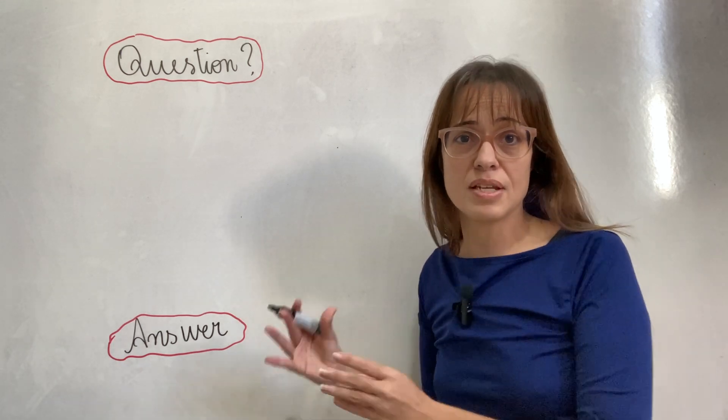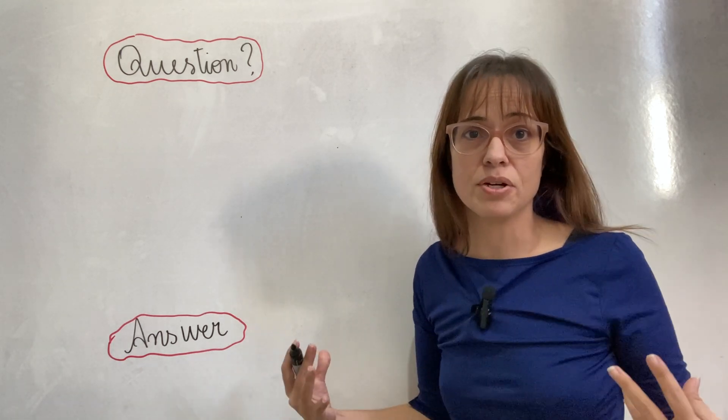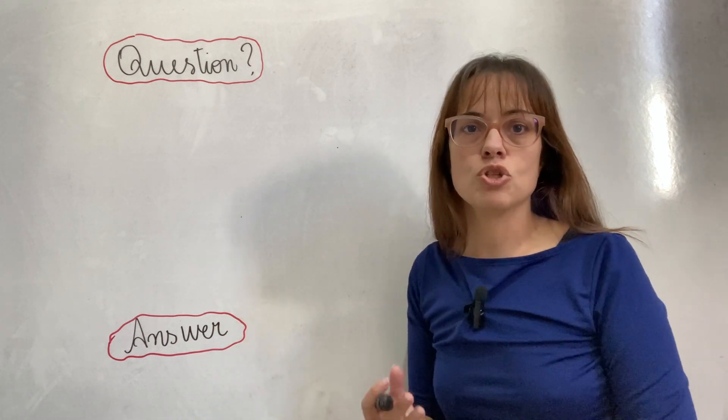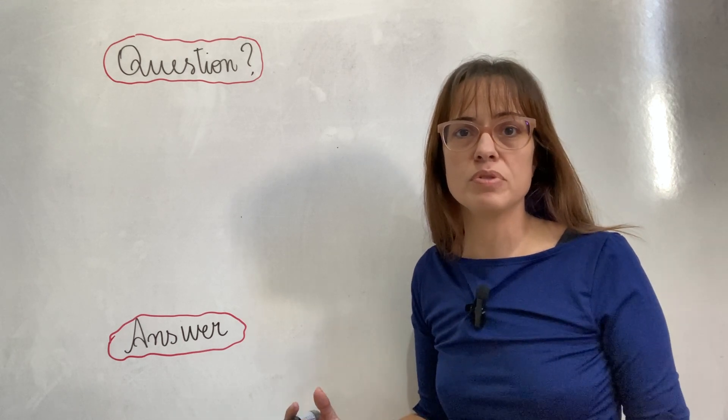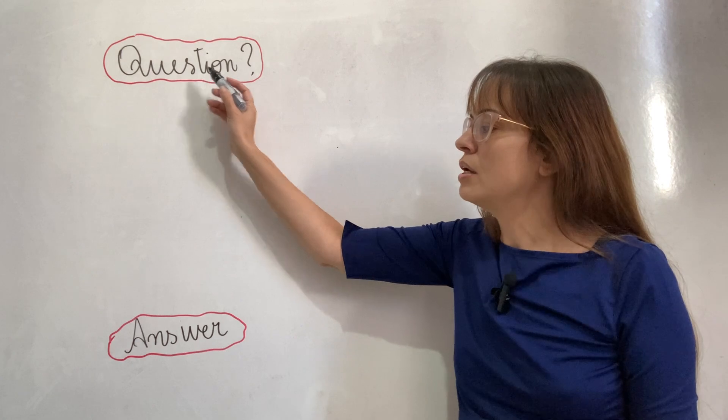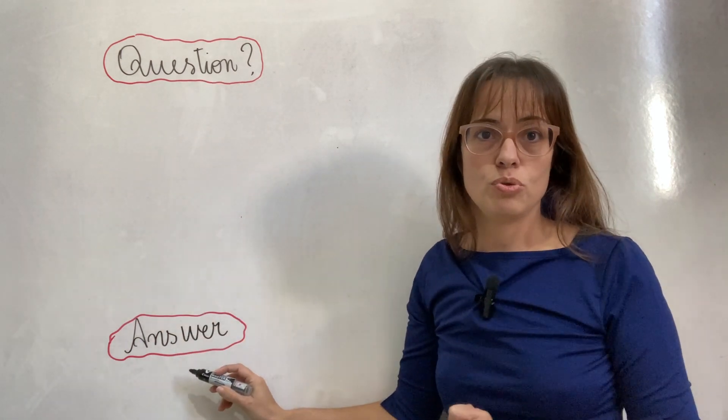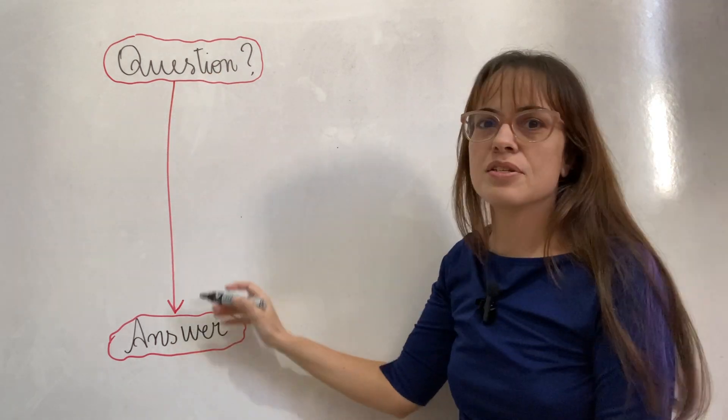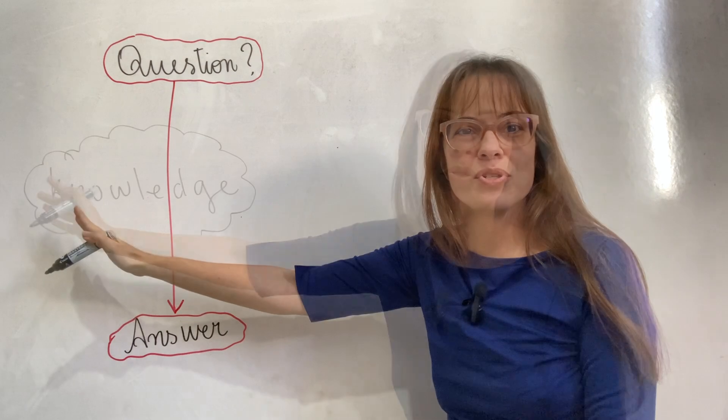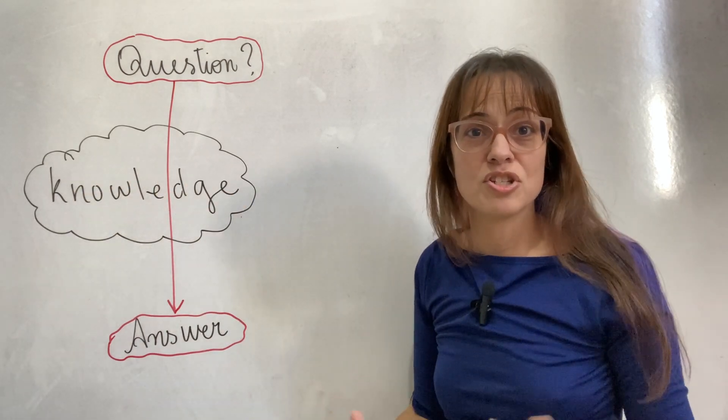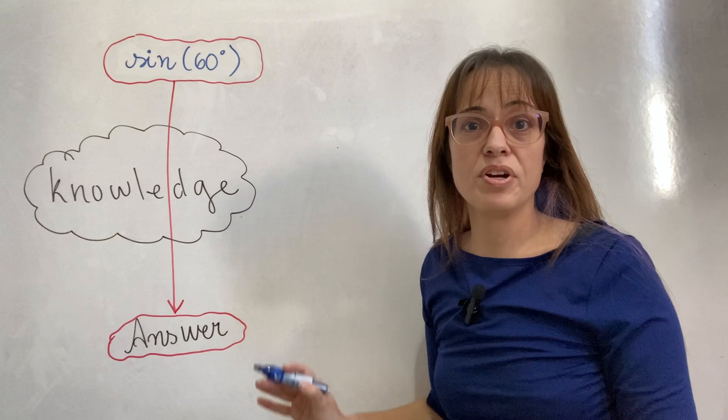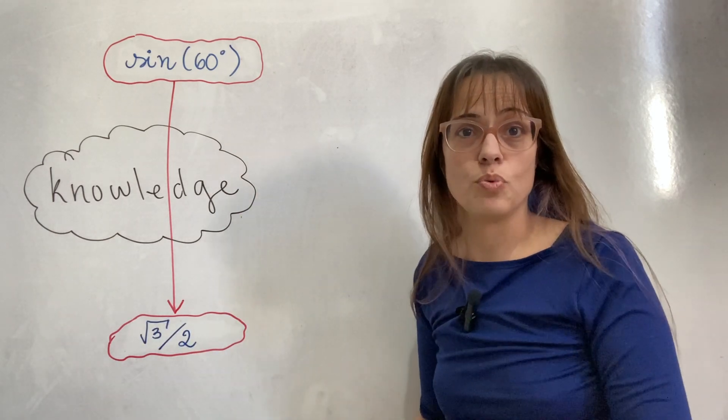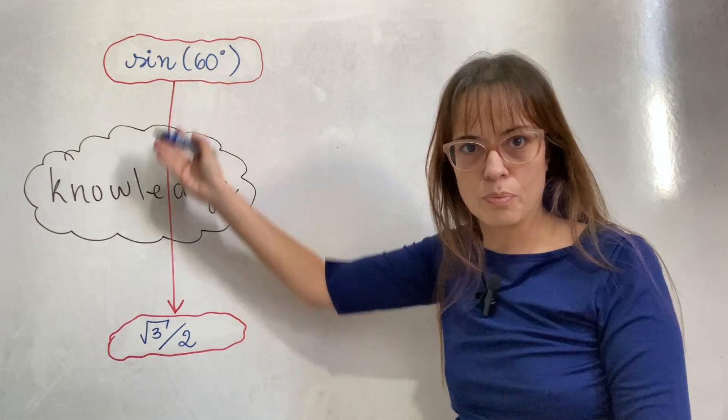But more importantly, I want to use this as a framework to explain something bigger that annoys me in more contexts than just this one. So this is going to be an example of the way that people deal with the basic situation of having a question and wanting to get to the answer. Because you would think that the shortest path from a question to the answer is this straight line here that goes through knowledge. So let's see what knowledge that is in this example where the question was, what is the sine of 60 degrees? And the answer is the square root of 3 over 2. How do we get from here to there?